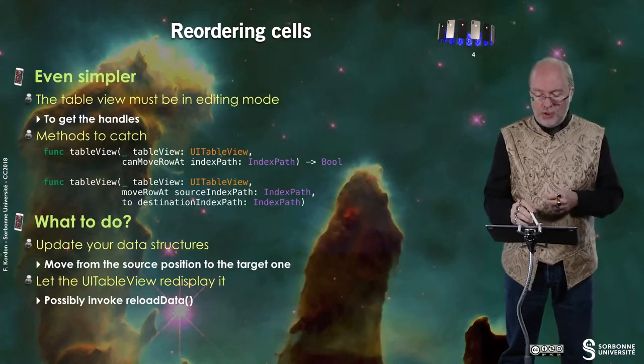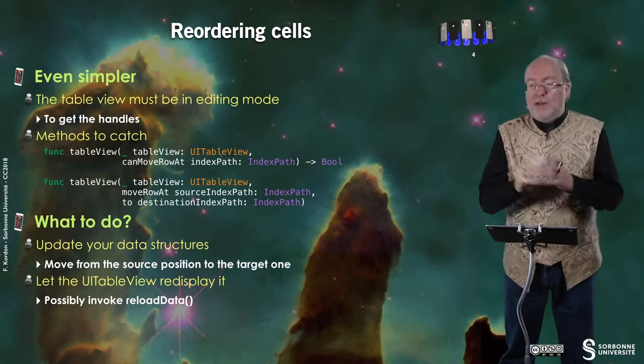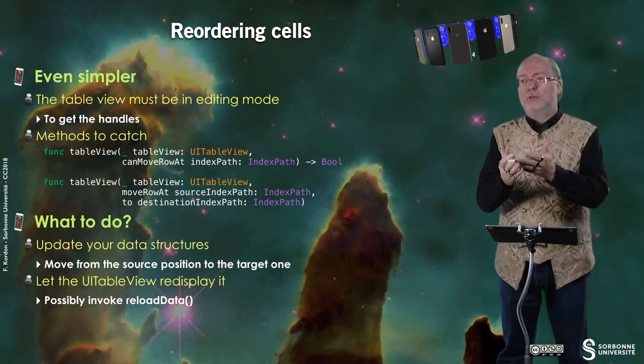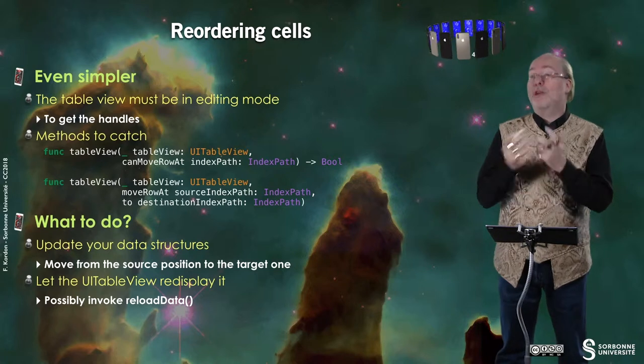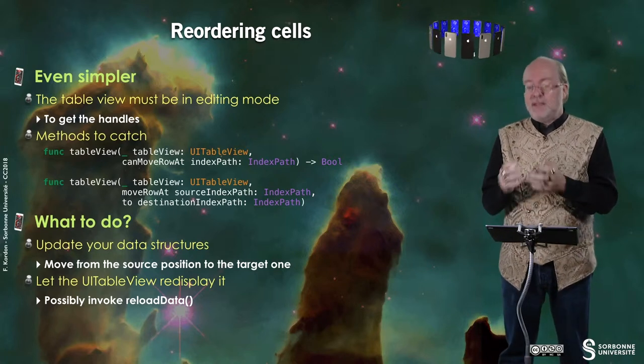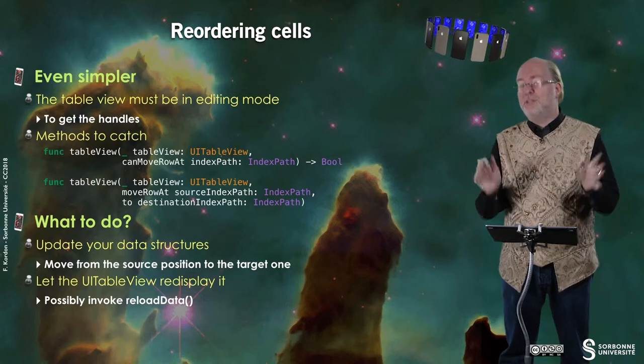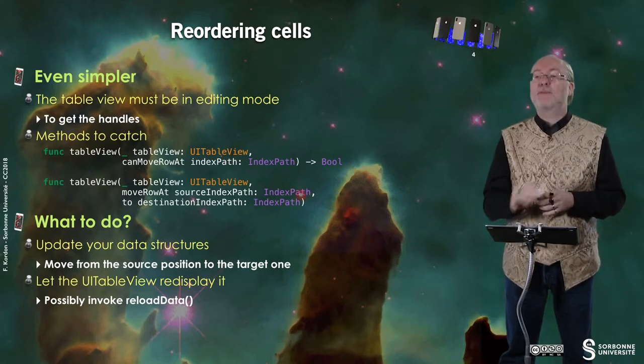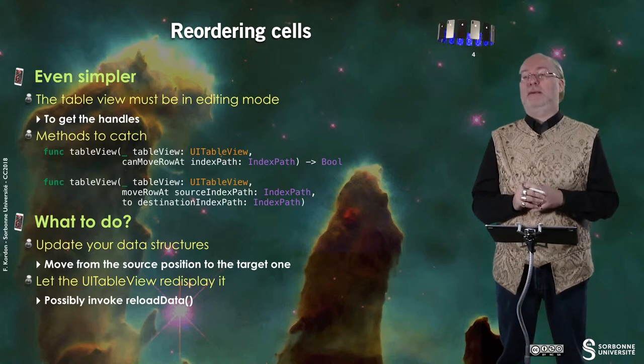You can also re-order cells and it's even simpler. If the table view is in editing mode, then you get the handles. When you catch a cell and drag it and drop it somewhere else, these methods are invoked. As for deletion, you have a first method that allows you to forbid the move or re-ordering of a given cell, meaning you will not have the handle. The second method tells you that this cell coming from this index path has been moved to this other index path.